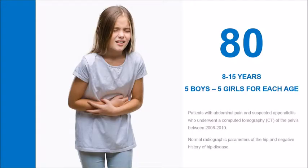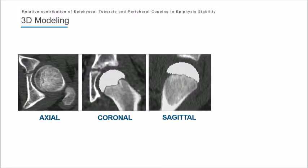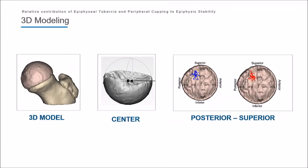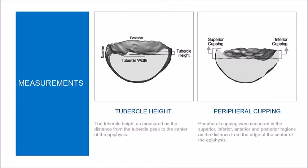In order to understand this phenomenon better, we took a group of patients that had CT scans to look for appendicitis — patients without hip symptoms, presumably normal hips — and used that to understand the structure of the physis as the hip grows. It's a cross-sectional cohort study. We segmented CT to look at the physis structure by segmenting the epiphysis and the proximal femur. Using this data, we were able to localize the epiphyseal tubercle in terms of location, as well as the size of the tubercle and the size of the cupping over time. This has been published in the past.